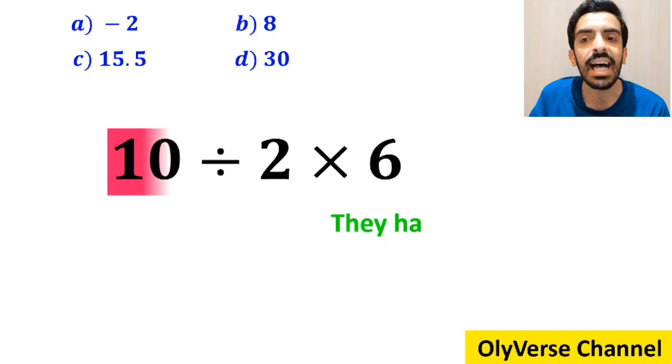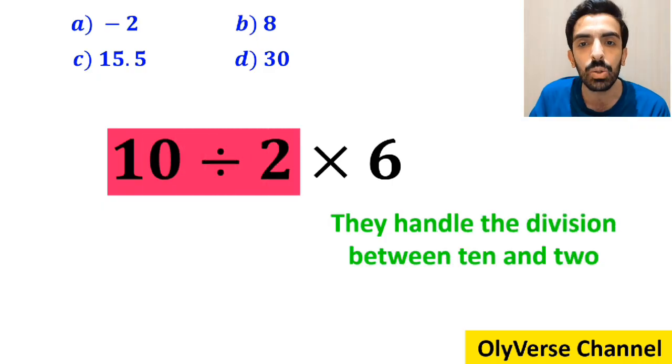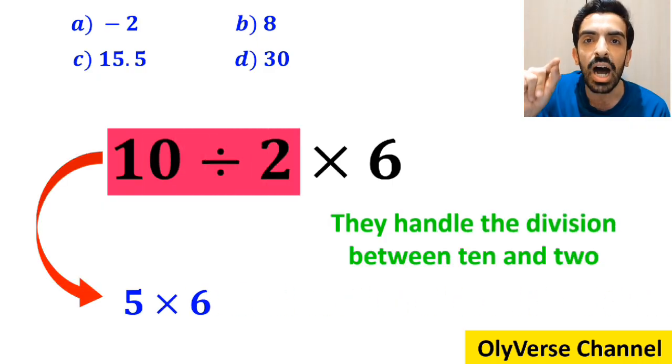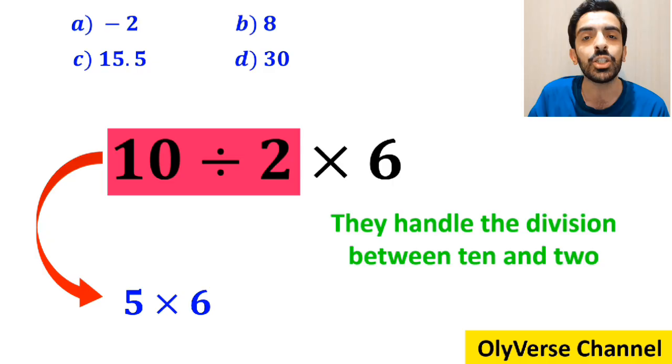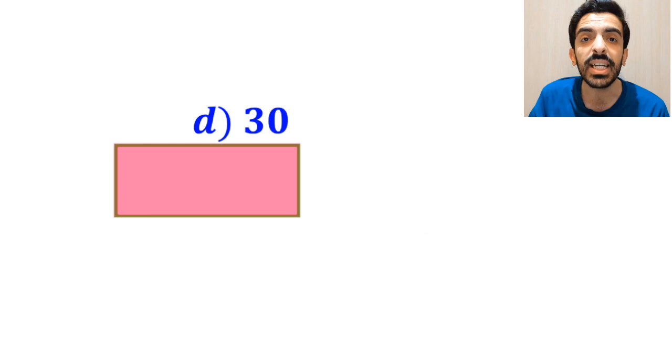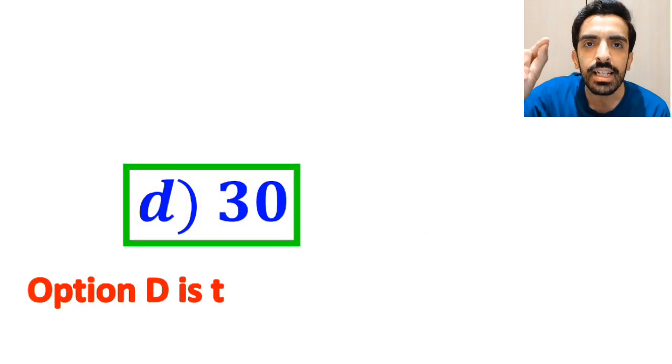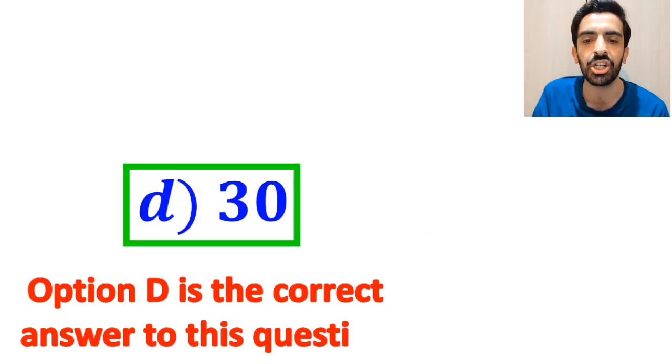In the final step, they handle the division between 10 and 2 and write this expression as 5 multiplied by 6, which ultimately gives them the answer 30. Then, without any hesitation, they quickly say that option D is the correct answer to this question.